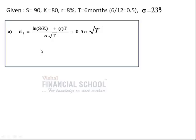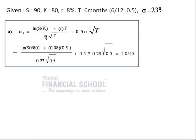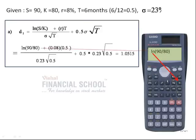The formula that we have is d1 equals ln(S/K) plus (r times T) divided by (standard deviation times root T) plus 0.5 times standard deviation times root T. How to calculate ln value? It's very simple from the calculator. You will have ln bracket open 90 divided by 80, which gives you the ln answer. We get around 1.0515 as the d1 value.